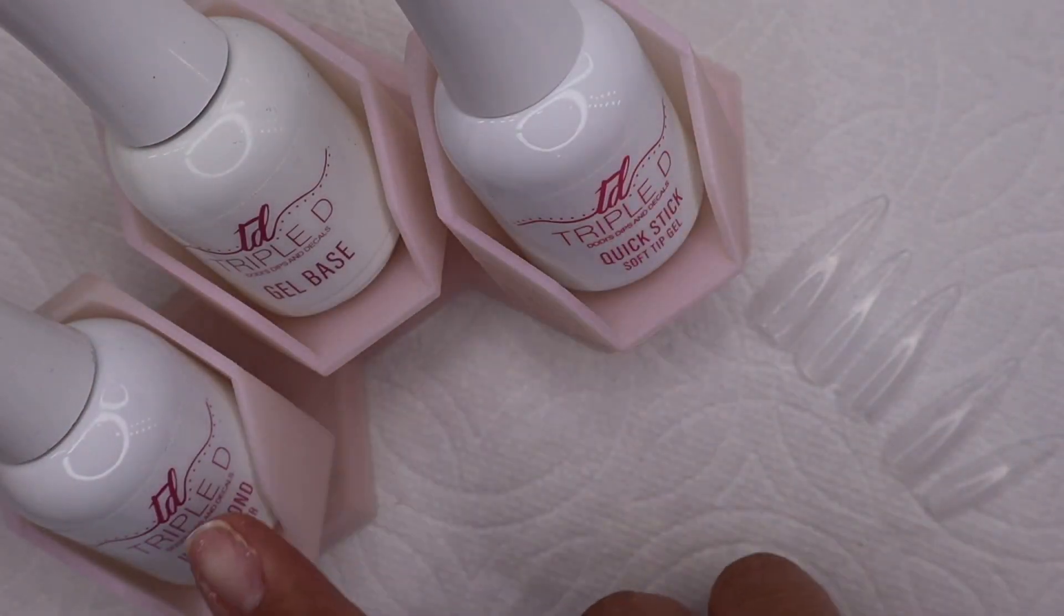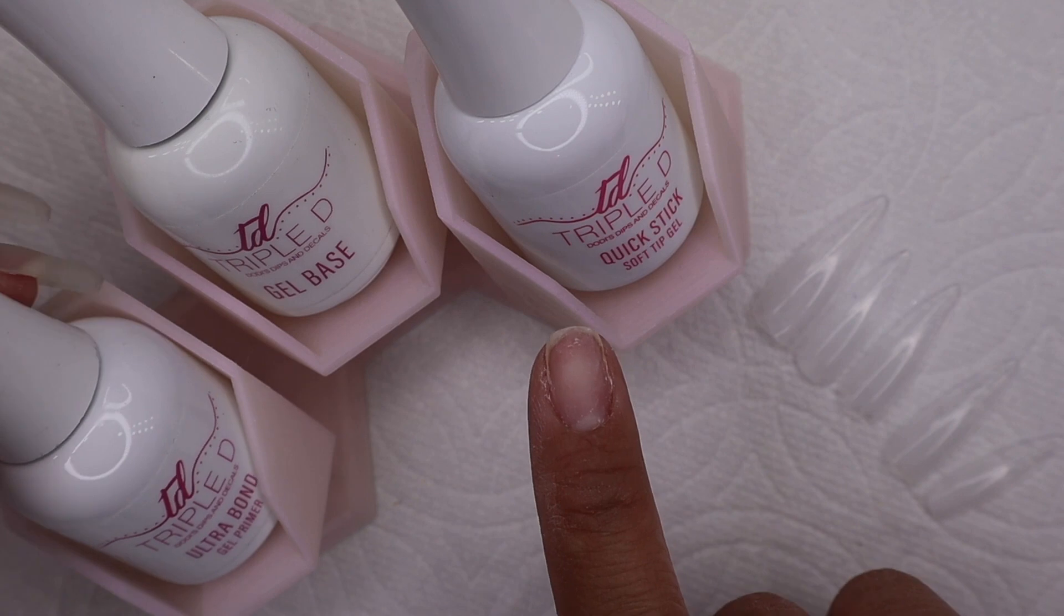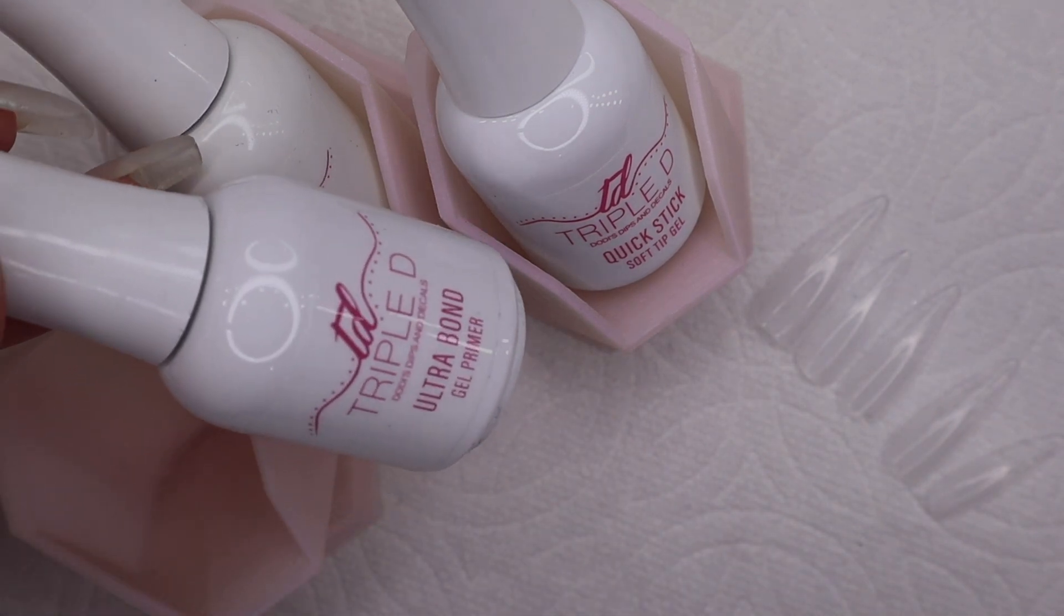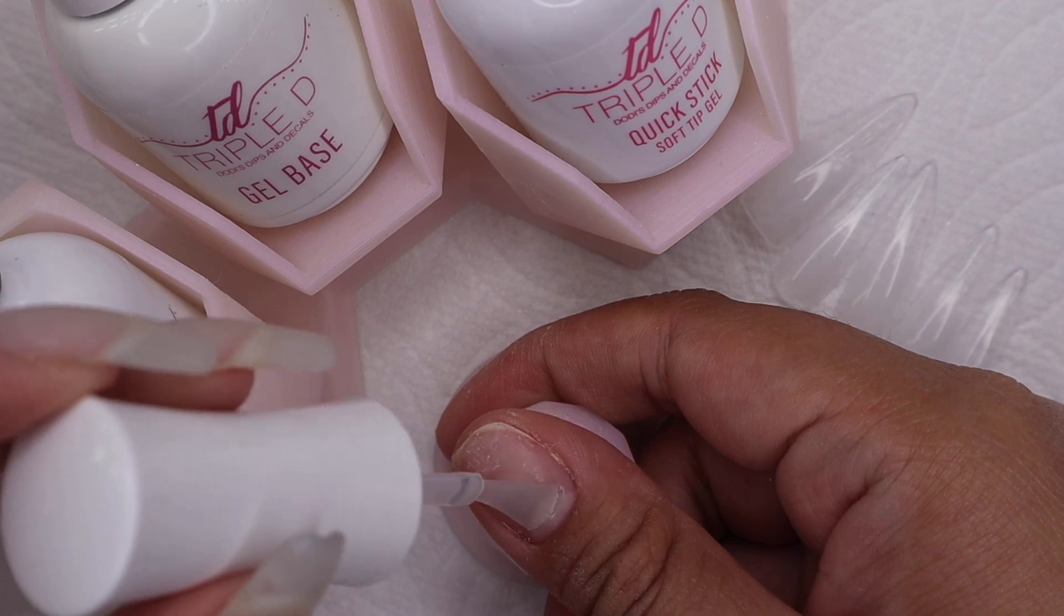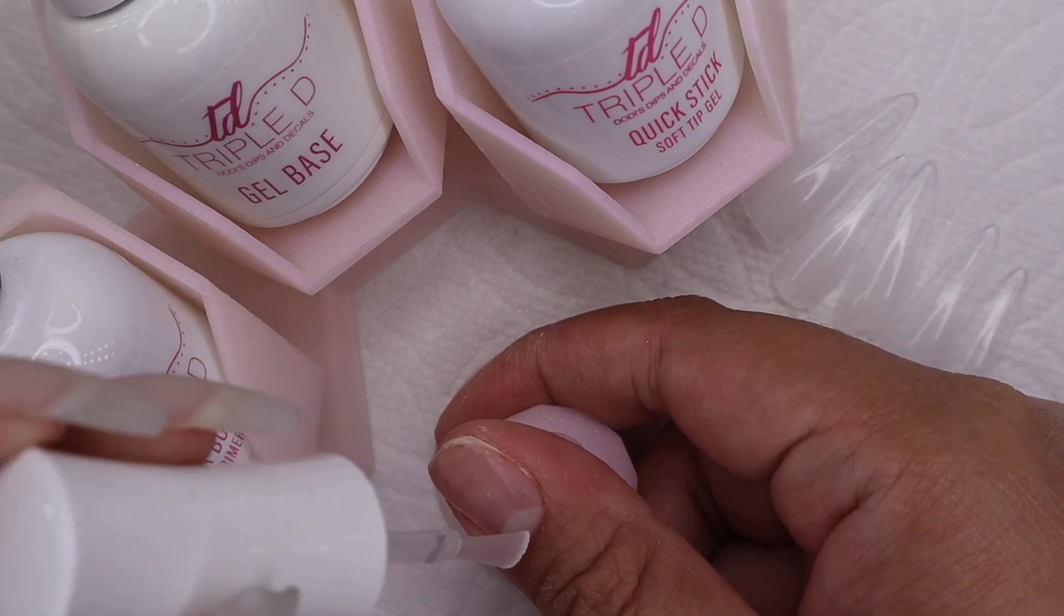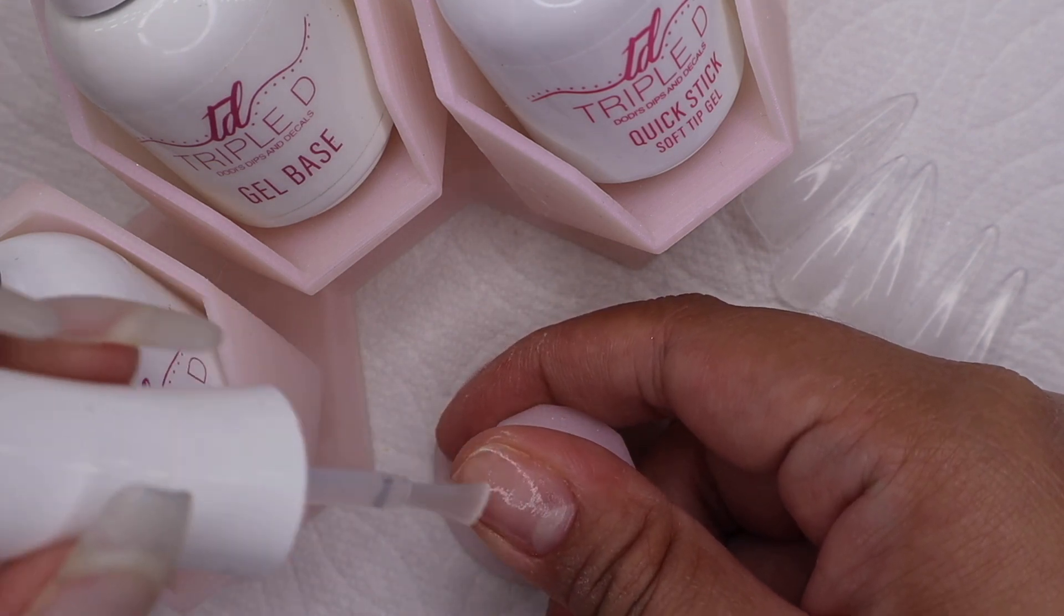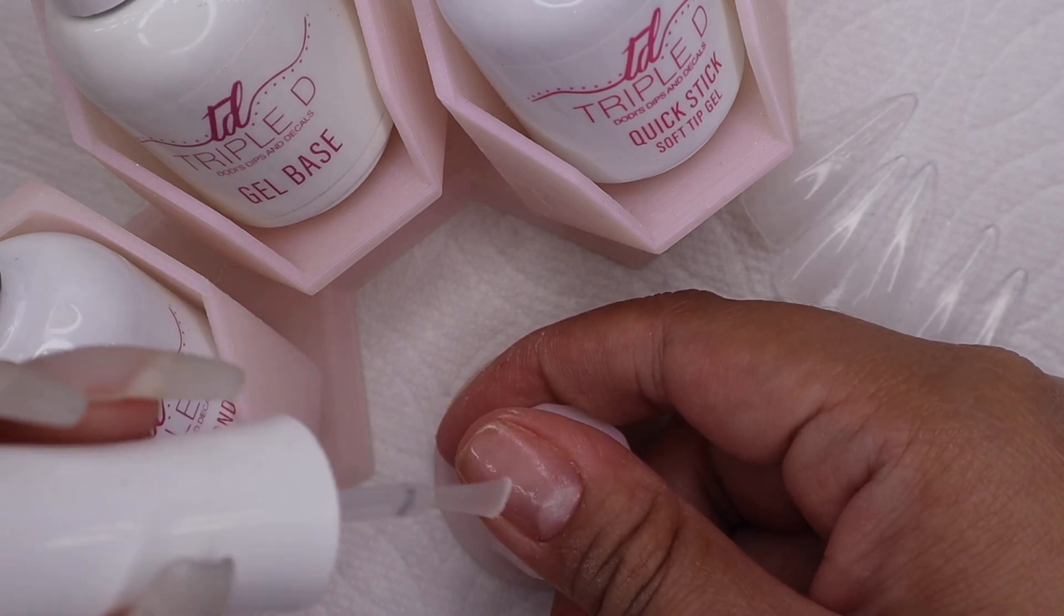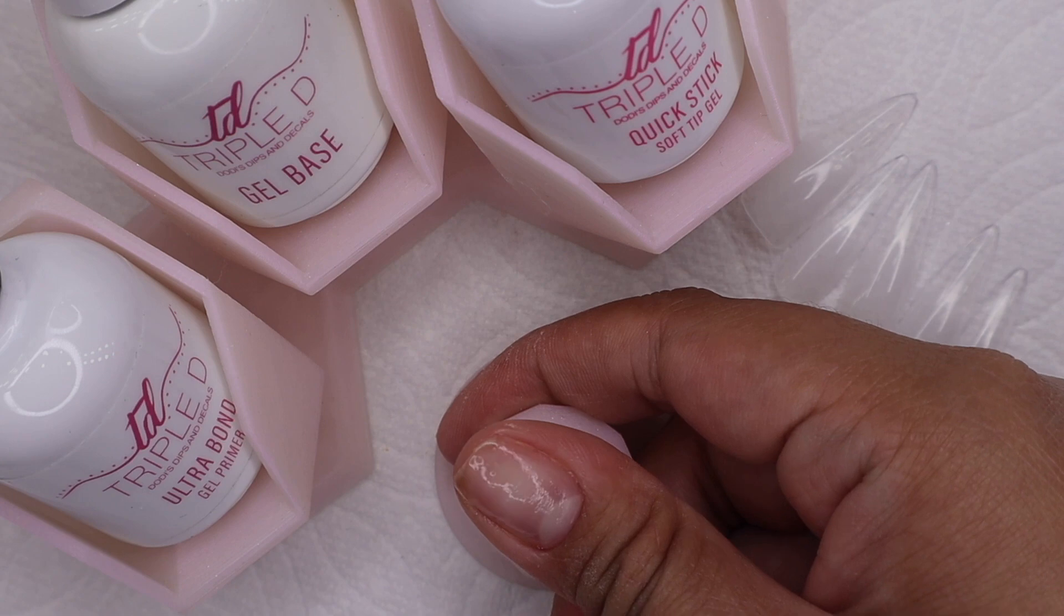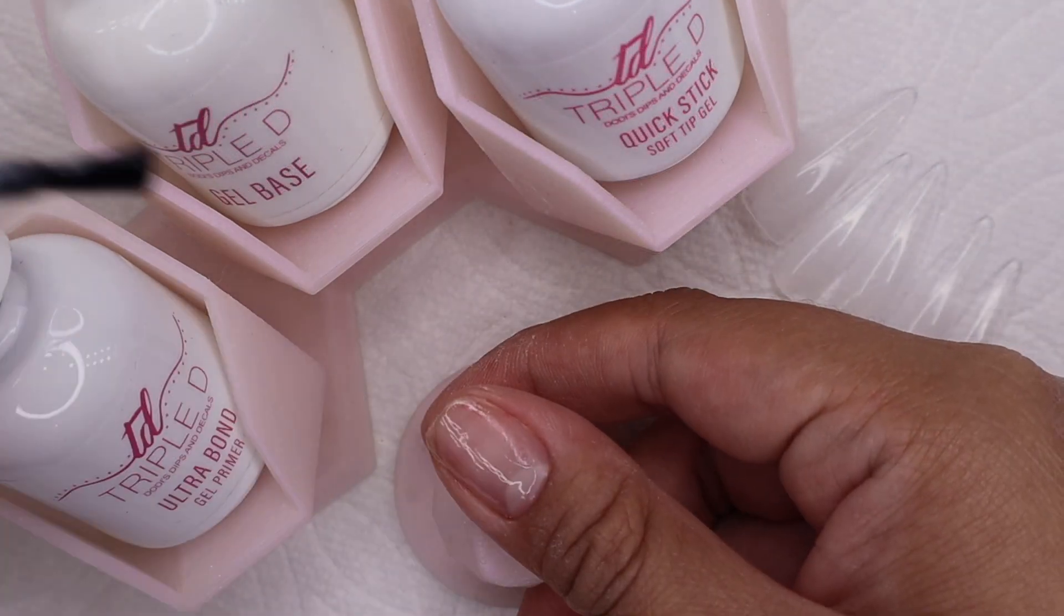I am now going to apply the liquids. First I'll be using the Ultra Bond. This is going to help the gel products adhere more. The Ultra Bond leaves a tacky layer even though it's already dry, so that is completely normal.